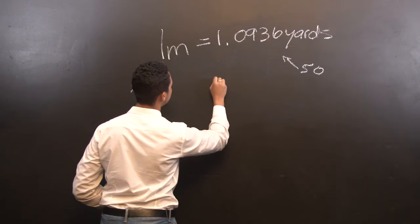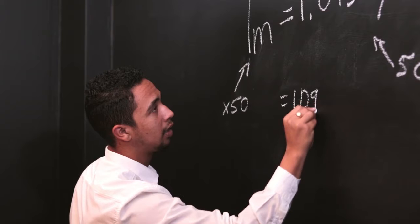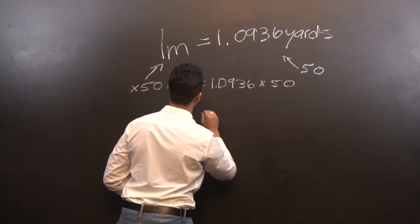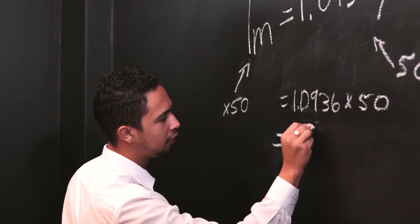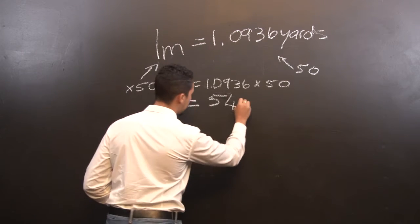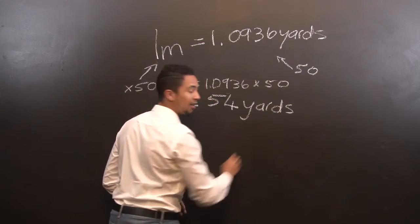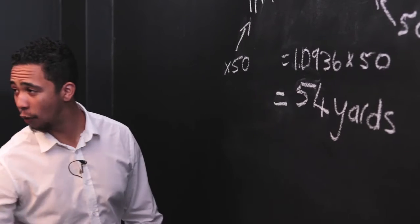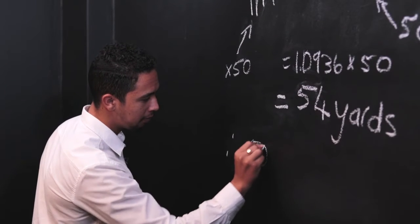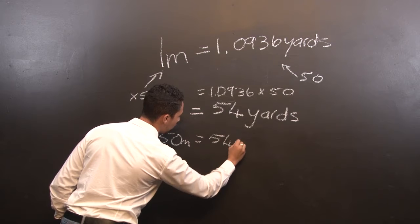That will give us 1.0936 times by 50, which is equal to 54, 54 what? Yards. Please do not forget the units. Therefore, 50 meters is equal to 54 yards.